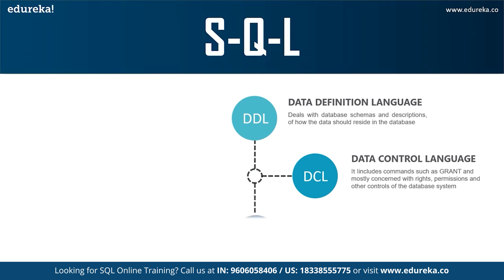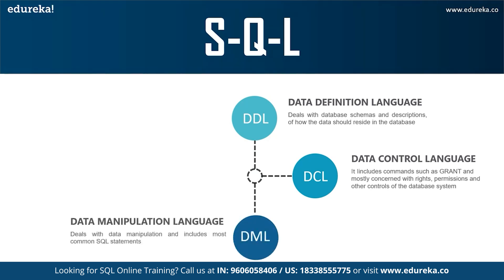The next command is DML — Data Manipulation Language — which allows you to access and manipulate data. It helps you to insert, update, delete, and retrieve data from the database. The INSERT command is used to insert data into a table, UPDATE is used to update existing data within the table, and DELETE is used to delete records from the database.